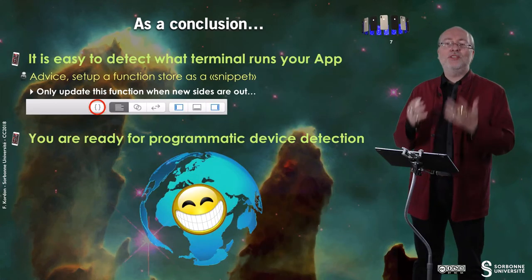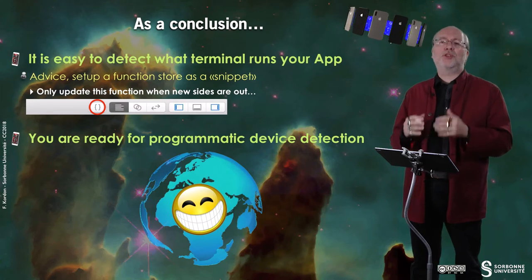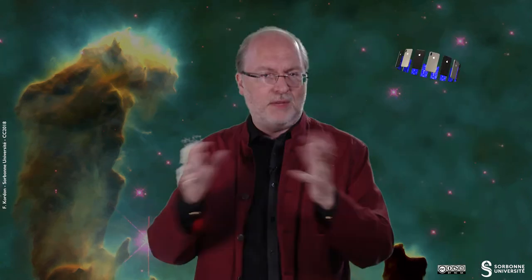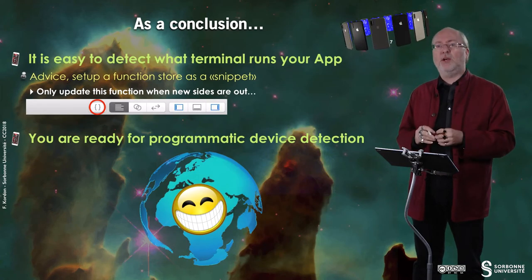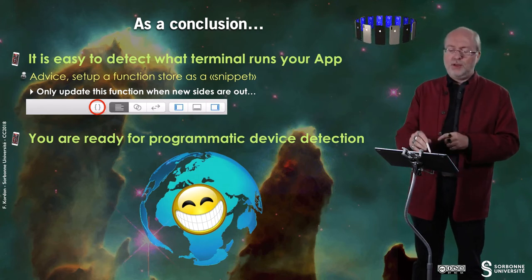As a conclusion, you have discovered that it's quite easy to detect what device is running your application. I would recommend setting up such a function as a snippet — with the enumerated type and the function — not inside viewDidLoad or any function dealing with graphical display, but as a separate function that returns a value from the enumerated type.